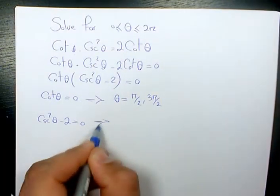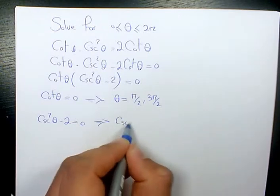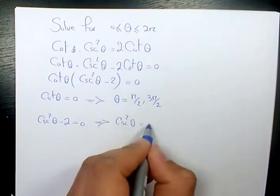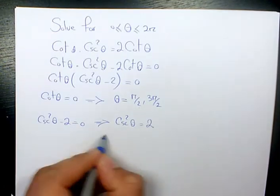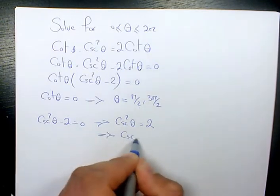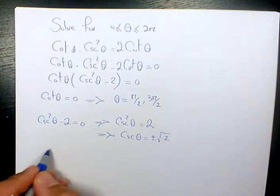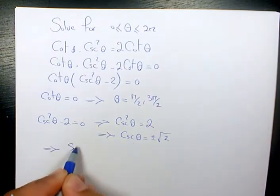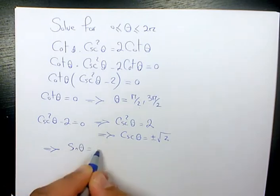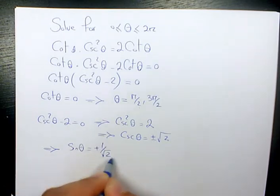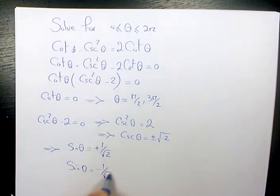And here in the second case we have cosecant squared theta will be equal to 2. It means that cosecant theta will be plus or minus root 2. And if I convert it to sine we need to flip it. So because cosecant is inverse of sine the answer is going to be 1 over root 2. And we have one more scenario now. It is negative 1 over root 2.